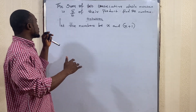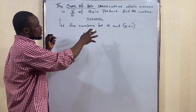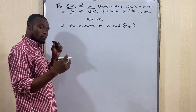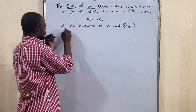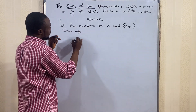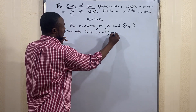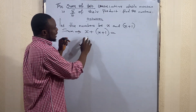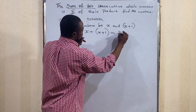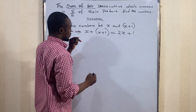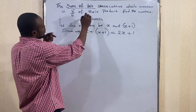The question reads that we need the sum of the two numbers. Sum means addition, so we are adding the two consecutive numbers. Sum implies x + (x + 1), which gives us 2x + 1.